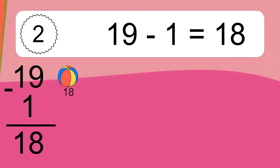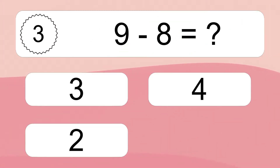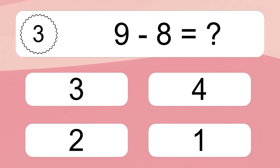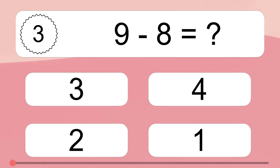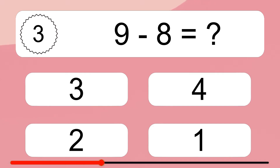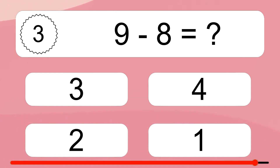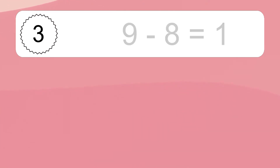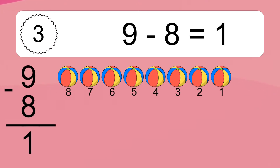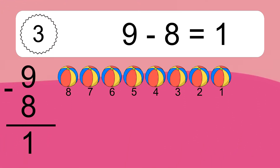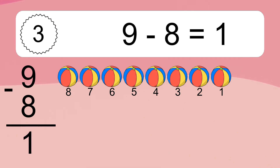9 minus 8 equals what? 9 minus 8 equals 1. Let's count it. 8, 7, 6, 5, 4, 3, 2, 1.